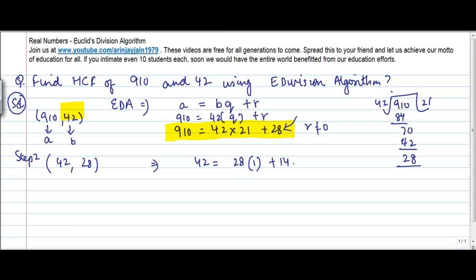Now again, is my remainder equal to 0? R is not equal to 0, so I move to step 3. What is the value of A? A is what was B in the previous one. So I write it as 28 and B is the remainder, 14. So I write: 28 equals 14 into 2 plus 0.